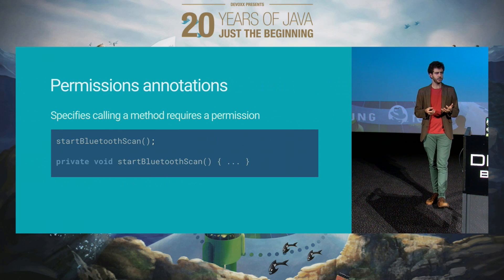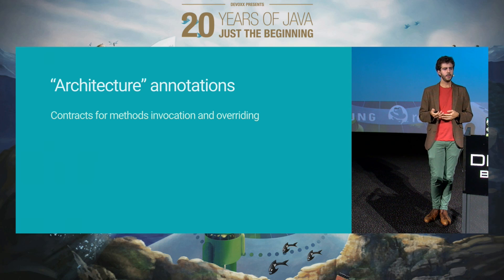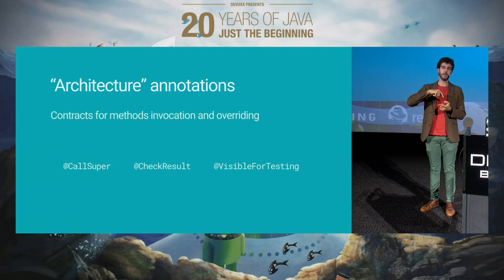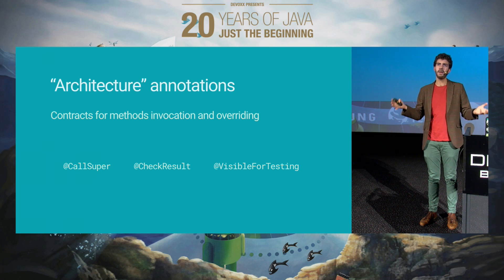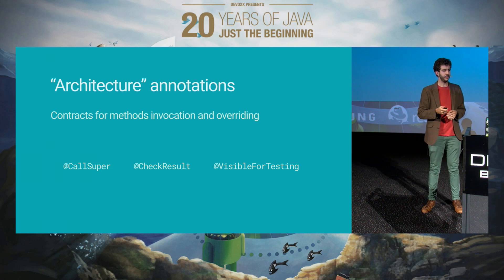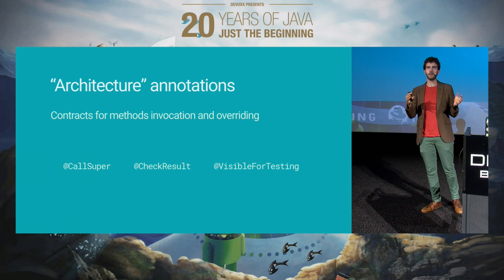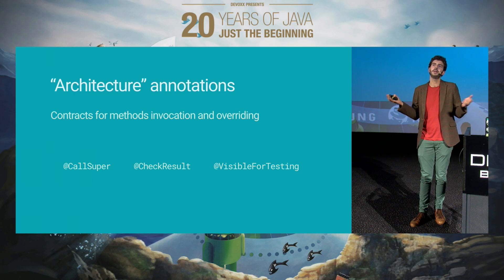Three other annotations worth knowing: @CallSuper means you have to call the super of this method. @CheckResult means you have to take the return value and do something with it — it's not there because of bad API design, it's there for a reason, and you can even suggest what to do with it. And then there is @VisibleForTesting, which means this field or whatever has got a wider scope than it should because you're using it for testing. That should never happen, but you never know.